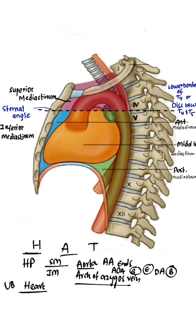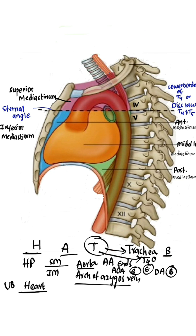The azygos vein drains into the superior vena cava at this level. T — the trachea bifurcates into the right and left bronchi at this level. Next, another T — remember thoracic vertebrae: the sternal angle lies at the level of the intervertebral disc between T4 and T5 vertebrae.